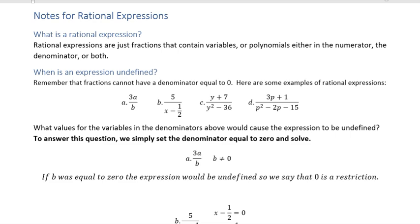And then we ask ourselves, when is an expression undefined? Here's some examples—here's four different rational expressions. This one just has a variable in the denominator and the numerator. This one has a binomial polynomial in the denominator. This one is something that needs to be factored, and so is this one to answer our question.